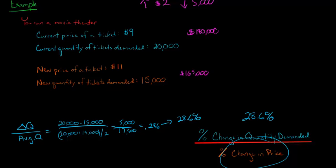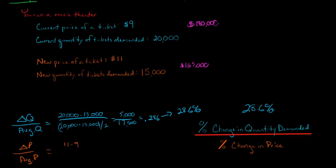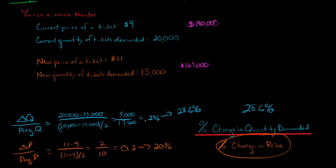Now we calculate the denominator: the percentage change in price. It's the same idea — change in price divided by the average price. The change in price is $11 minus $9, which is $2. The average price is $9 plus $11 divided by 2, which equals $10. So $2 divided by $10 equals 0.2, or 20%. The percentage change in price is 20%.